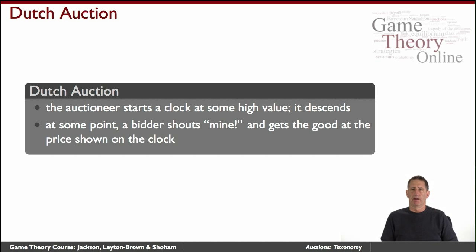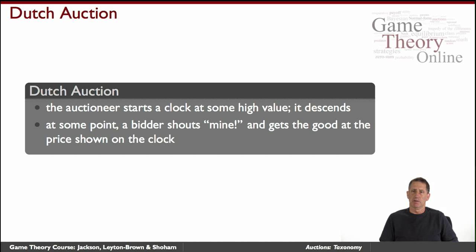We have the Dutch auction — a more standard term, so-called because this is in fact the mechanism used to this day in the Dutch flower market. This is a descending auction. Like in the Japanese auction, it's the auctioneer that calls out prices, whether explicitly or by a mechanism — in the Dutch flower market, a clock that everybody can look at starts at a high price and gradually goes down. At some point, the bidder claims the object, say the flower palette, by shouting 'mine' or, as in the Dutch flower market, hitting a buzzer, and they get that good for that price. You can think of it as a game of chicken — everybody would like to get the good at the lowest possible price, but if they wait too long, somebody could beat them to the punch.